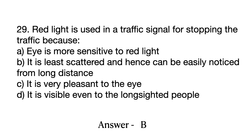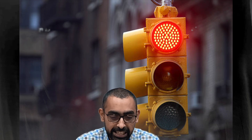Question number 29 is about why we use red light in traffic signals. If you have read basic physics and the wavelengths of different colors of the spectrum, you know that least scattering means the light travels a longer distance and is visible from farther away. So the answer will be B: red light is least scattered and therefore can be seen from a distance.